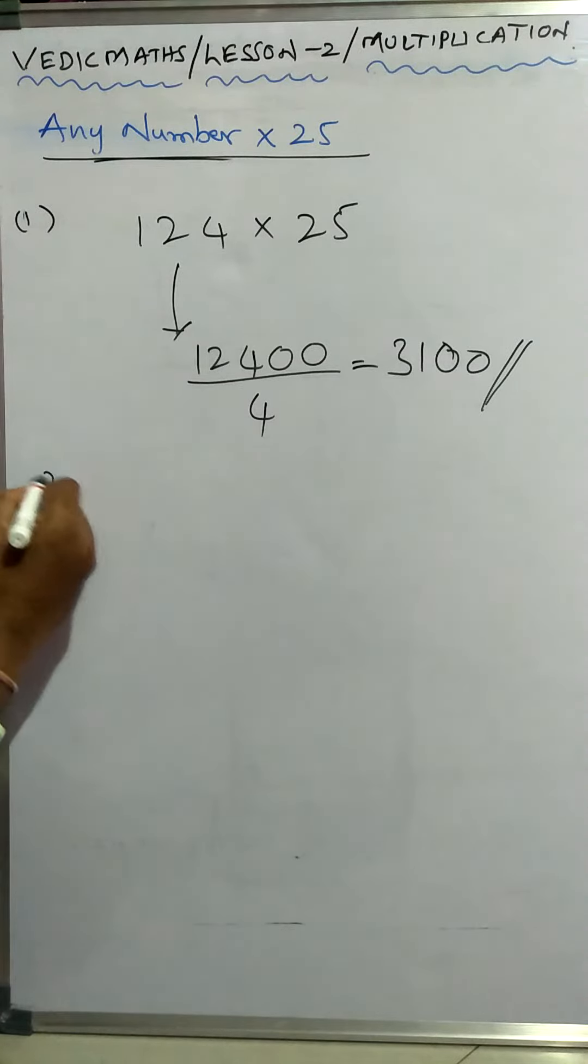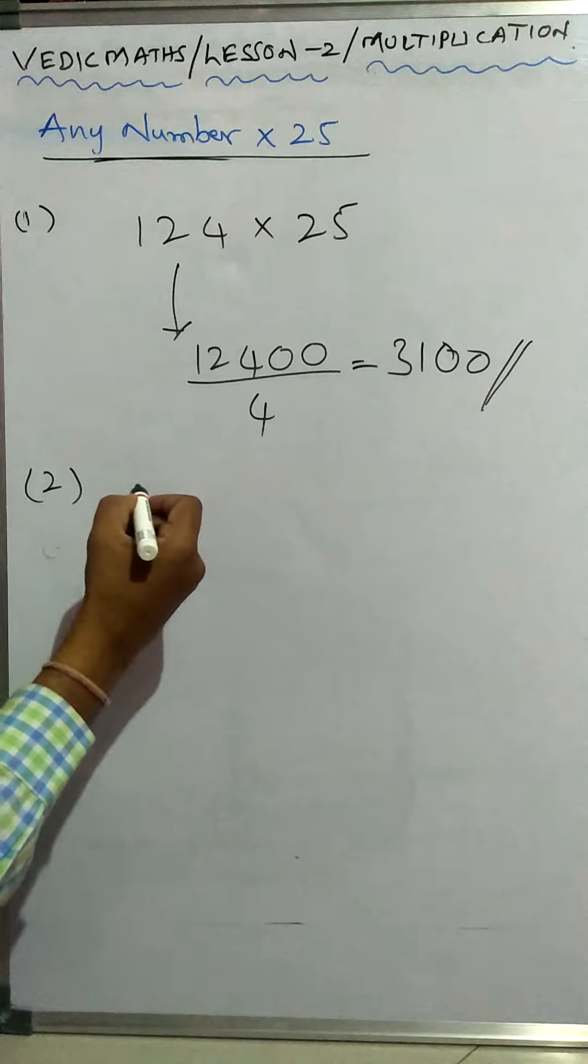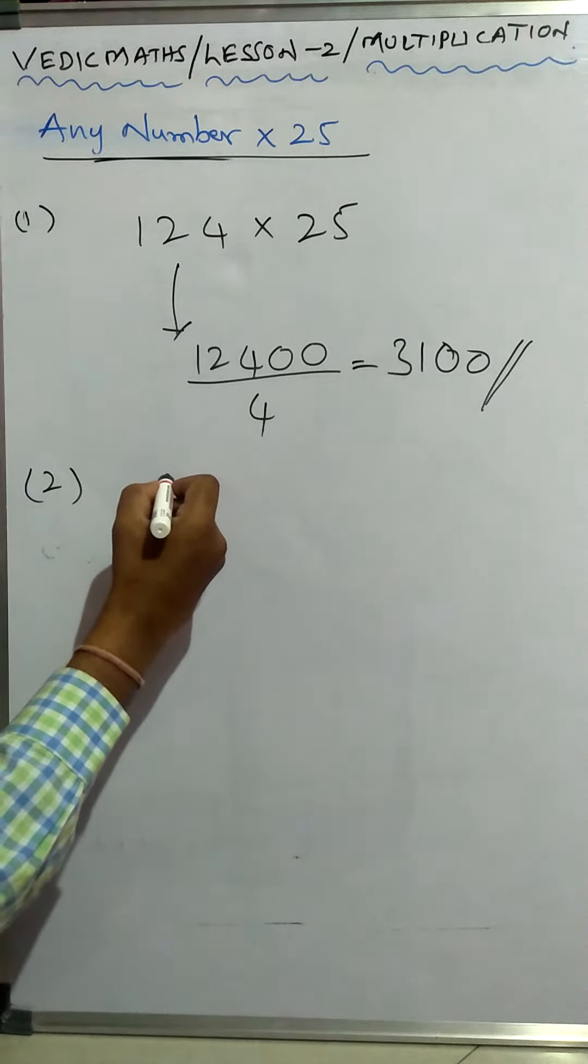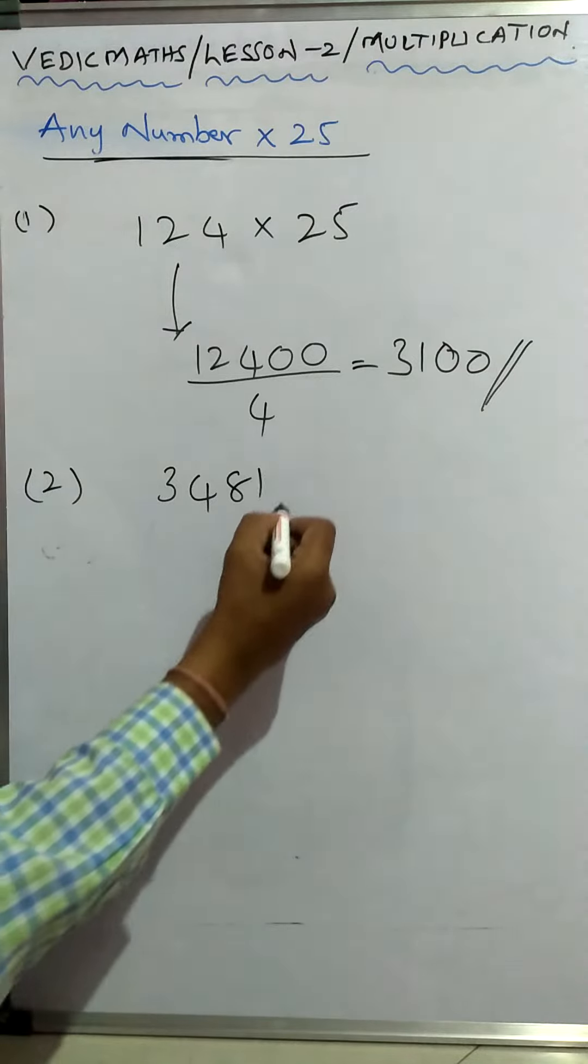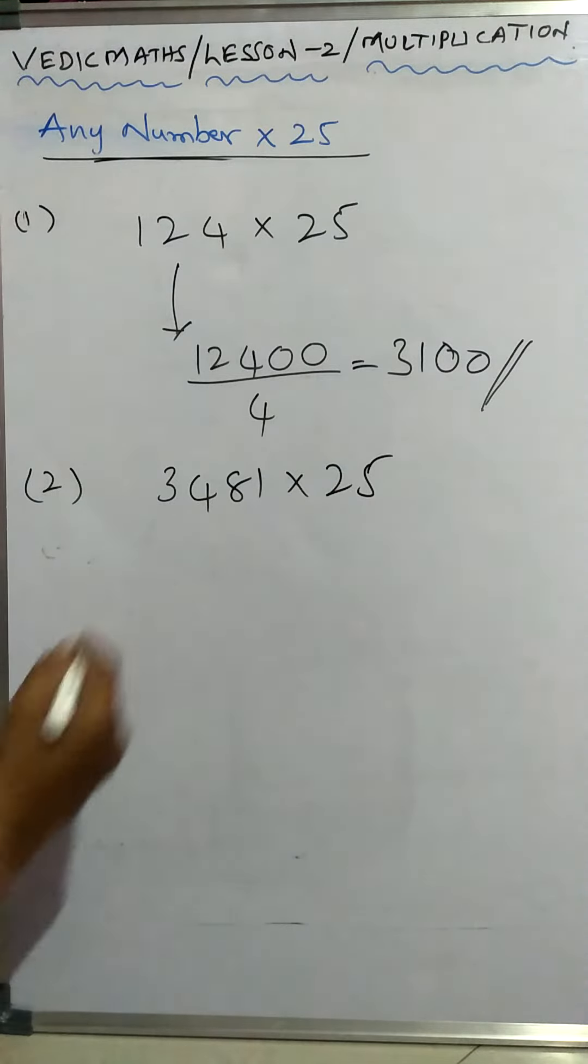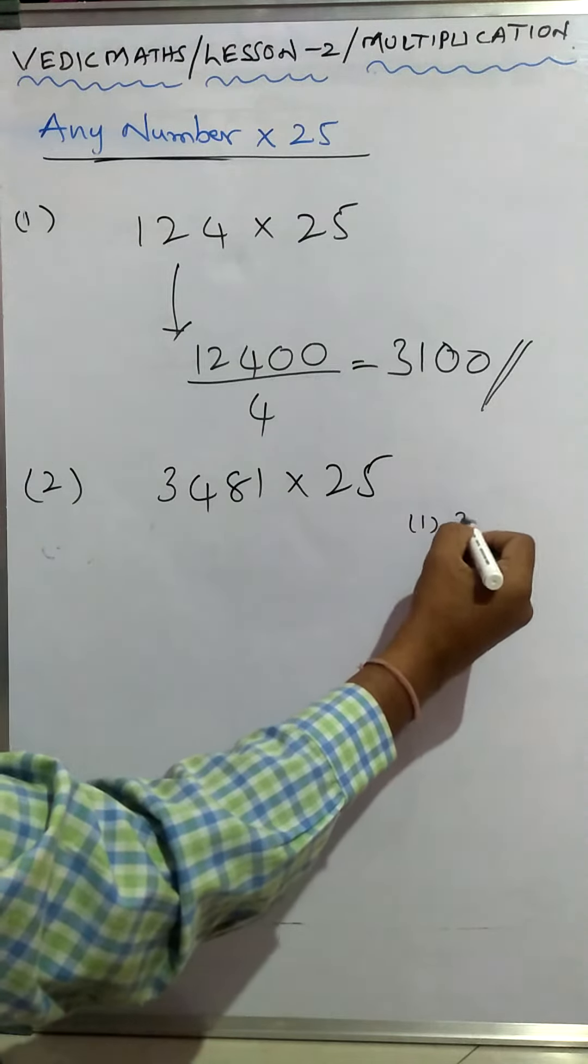If you observe the second example, if you take one more example here: 23481 into 25. What you will do? Put two zeros, so first step is two zeros.